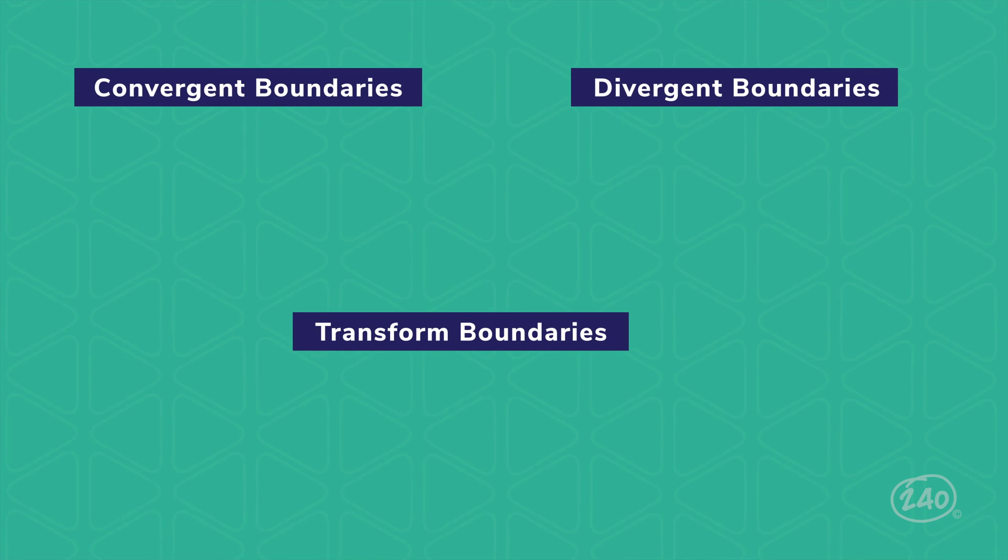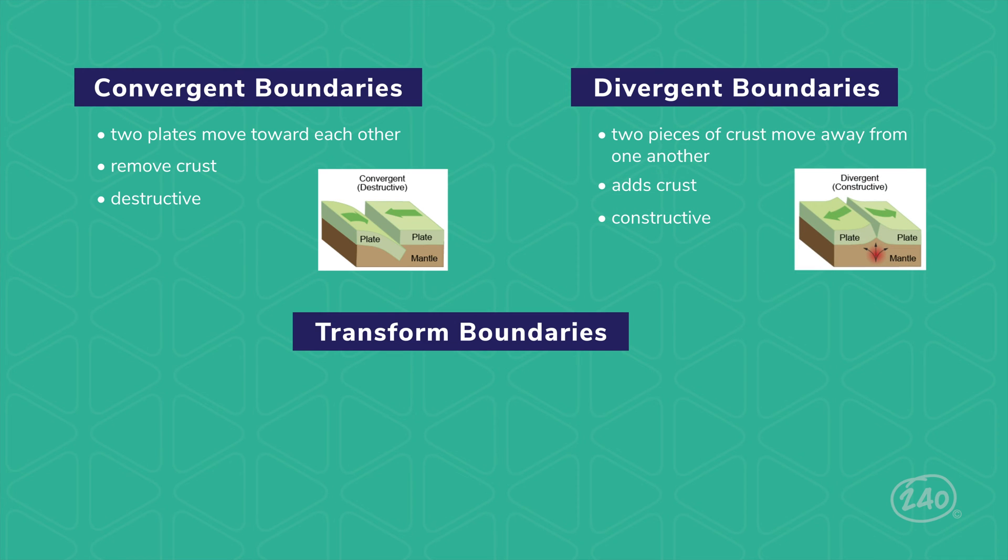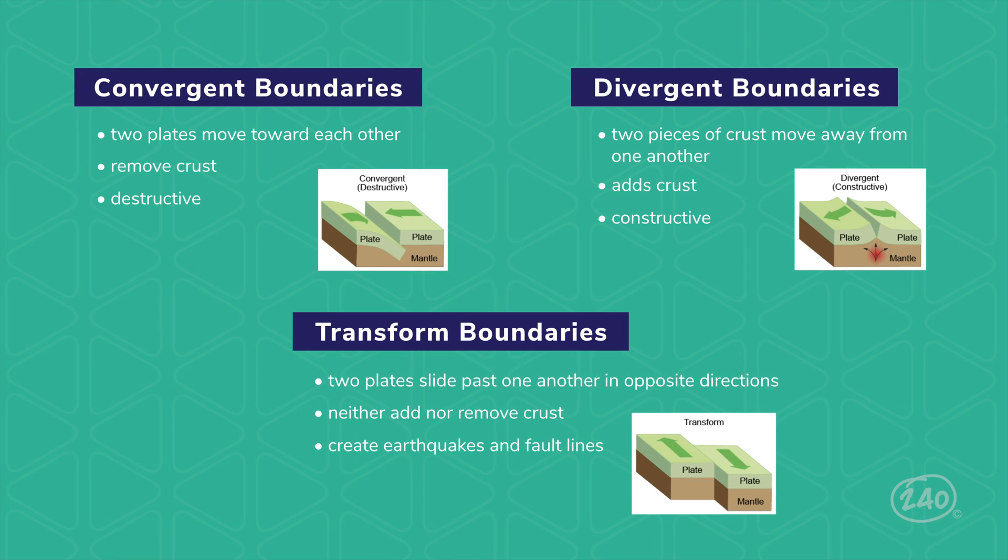Let's take a sneak peek into what you'll see when you dive into plate tectonics. You're going to need to know the difference between the three types of tectonic plate boundaries. Convergent boundaries occur when two plates move toward each other. Divergent boundaries occur when two plates move away from each other. And transform boundaries occur when two plates slide past each other.